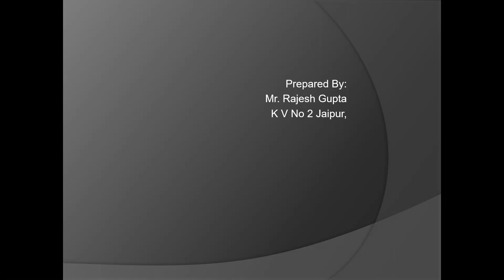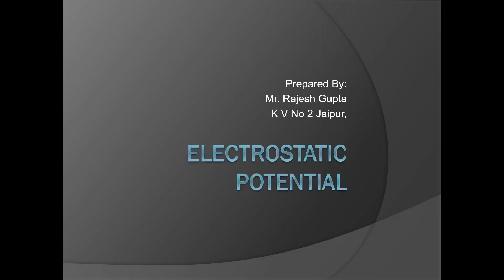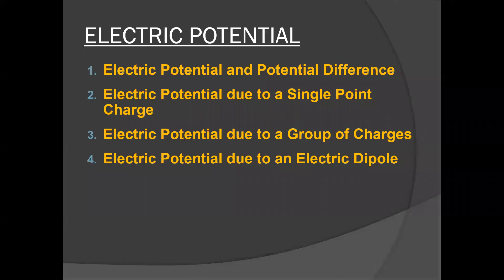In this Chapter No. 2, we will discuss Electric Potential. The four concepts covered are: Electric Potential and Potential Difference, Electric Potential due to a single point charge, Electric Potential due to a group of charges, and Electric Potential due to an electric dipole on axial as well as equatorial line.